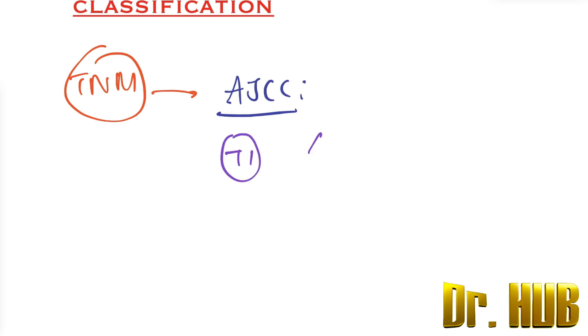So here T1 stands for less than 1 mm. T2 is going to be 1.01 to 2 mm.